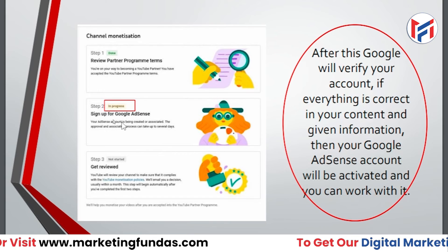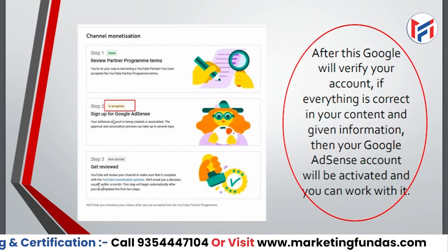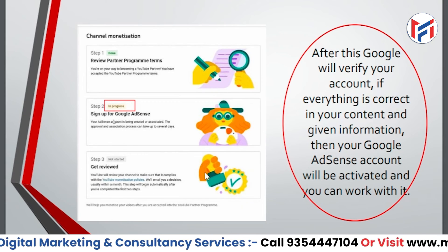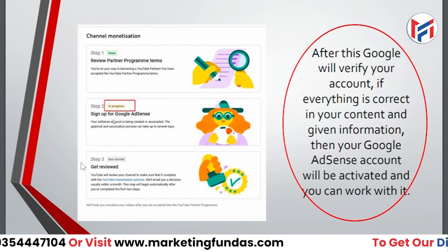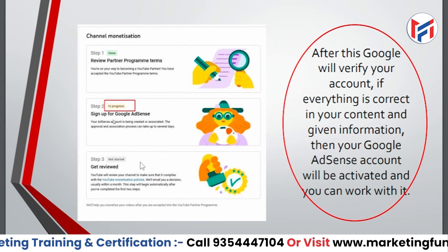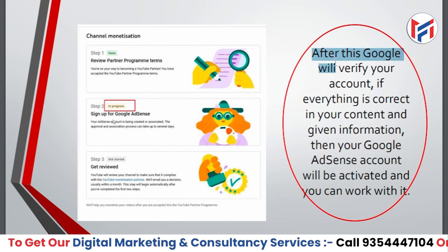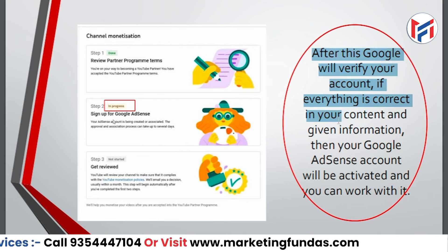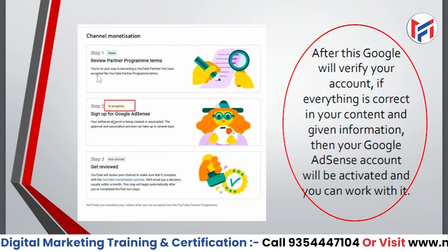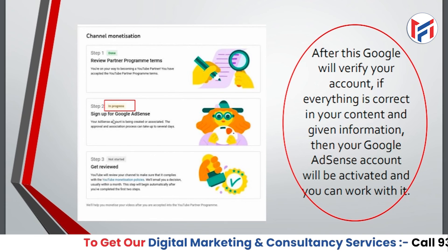Once the second step is done and your AdSense account is created, the last step is to connect your AdSense account. Click Start again and link the AdSense account by clicking the Accept button. If your channel and content have no issues, you'll successfully connect your AdSense account with your YouTube channel. Google will verify your account, and if everything is correct, your AdSense account will be activated.